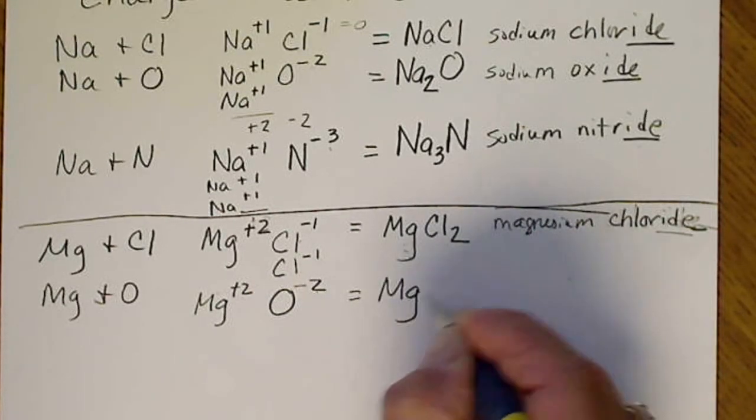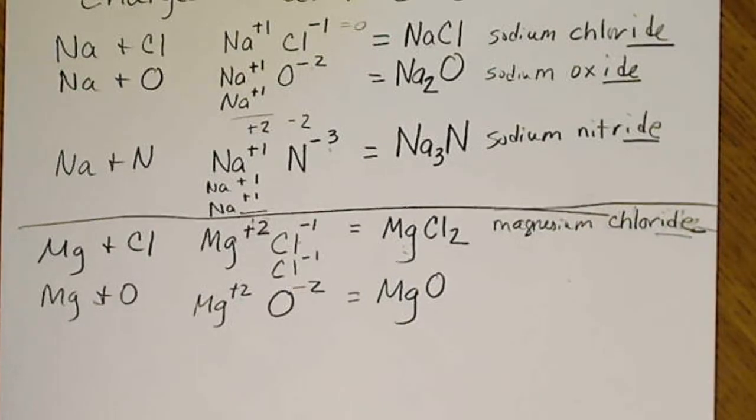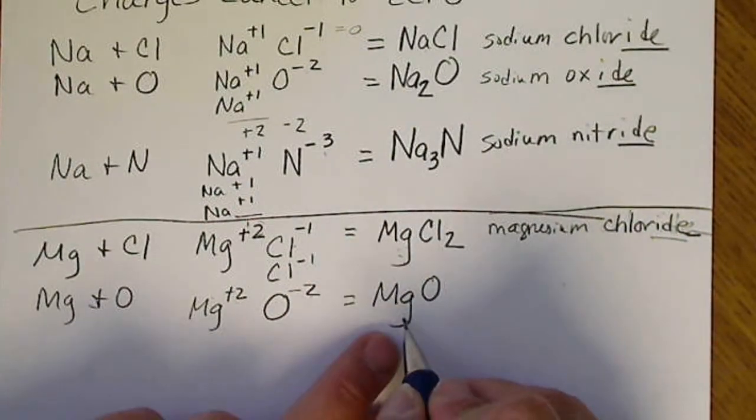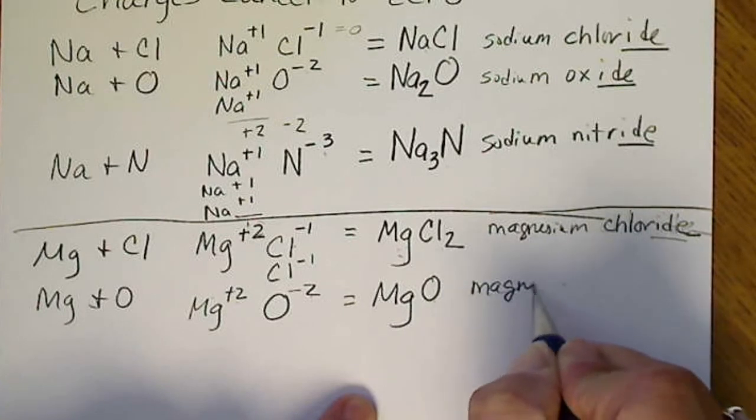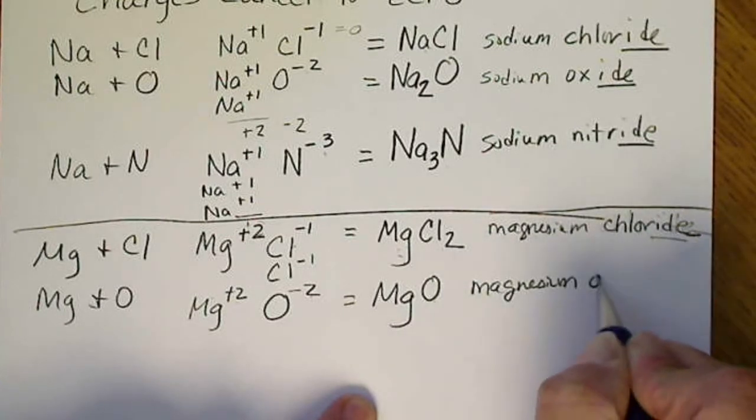So this will also be a 1 to 1 ratio. We're going to name the metal and then name the nonmetal. So this is magnesium oxide.